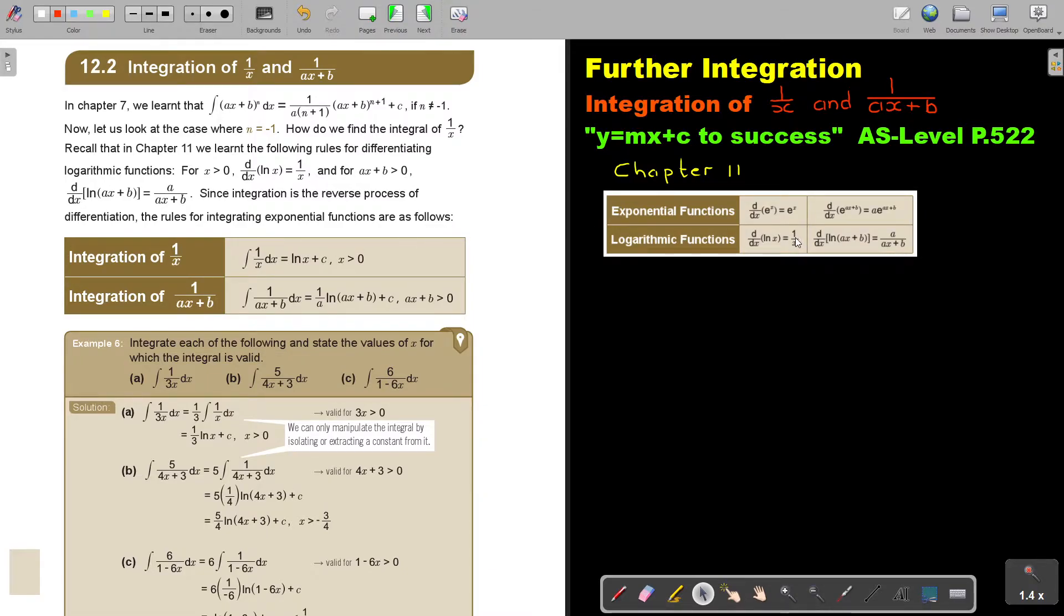If it's 1 over x, then it's going to be ln x plus c. And if it's 1 over ax plus b, then it's going to be 1 over a times ln of ax plus b plus c. But ax plus b must be bigger than 0. Let's look at an example.